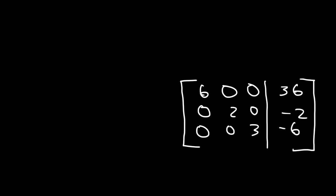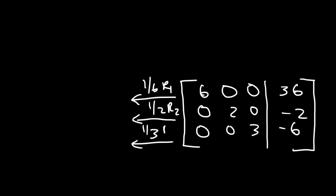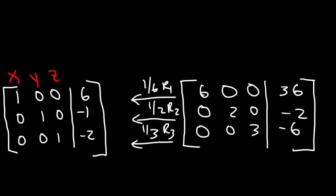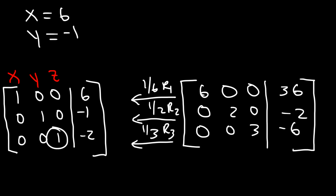To put the matrix in reduced row echelon form, I need to make the diagonal entries 1. I multiply row 1 by 1/6, row 2 by 1/2, and row 3 by 1/3. Row 1 becomes 1, 0, 0, and 36 divided by 6 = 6. Row 2 becomes 0, 1, 0, and negative 2 divided by 2 = negative 1. Row 3 becomes 0, 0, 1, and negative 6 divided by 3 = negative 2. So x equals 6, y equals negative 1, and z equals negative 2.